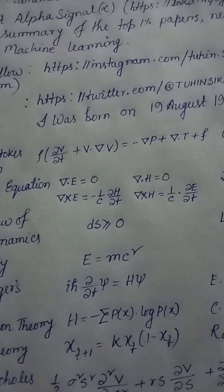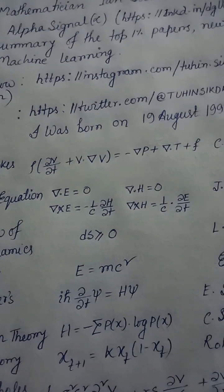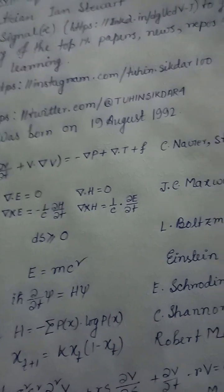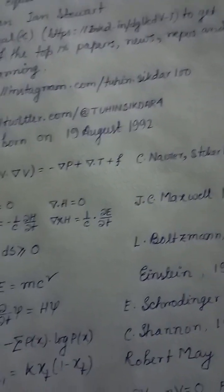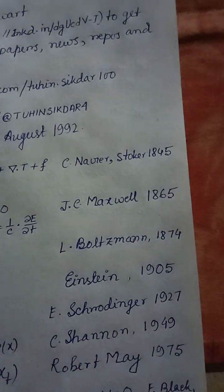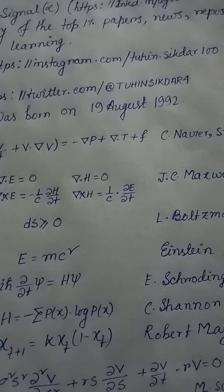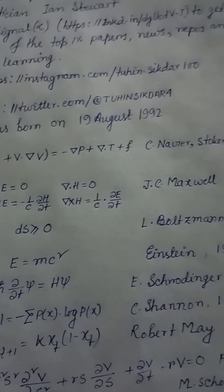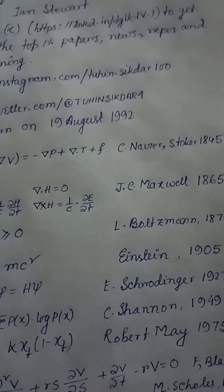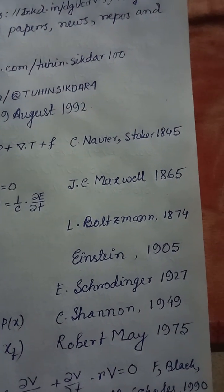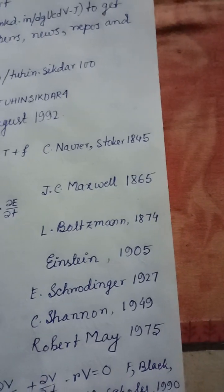Equation 12 — Second Law of Thermodynamics: dS ≥ 0. L. Boltzmann, 1874. Equation 13 — Relativity: E = mc². Einstein, 1905. Equation 14 — Schrödinger equation: iℏ(∂ψ/∂t) = Ĥψ. Schrödinger, 1927. Equation 15 — Information Theory: H = −Σ p(x)·log p(x). Shannon, 1949.